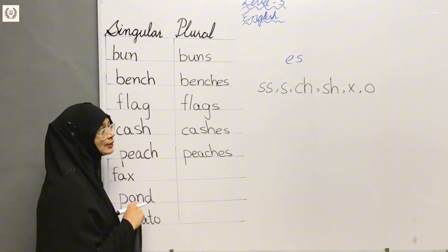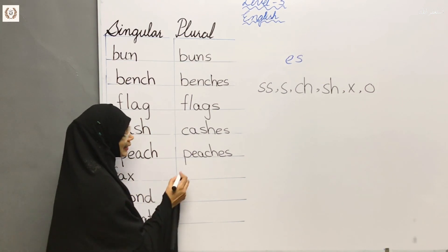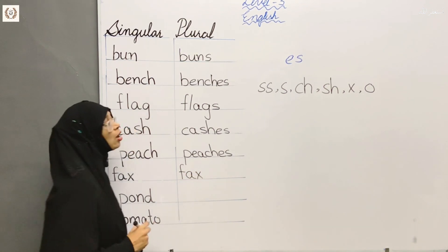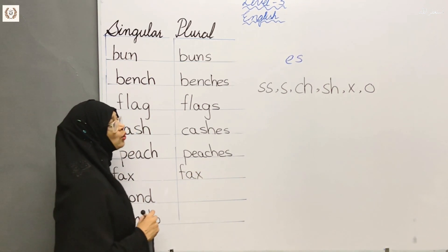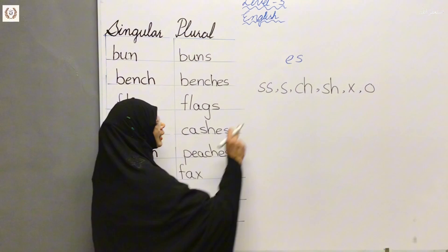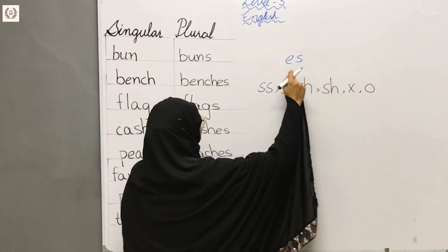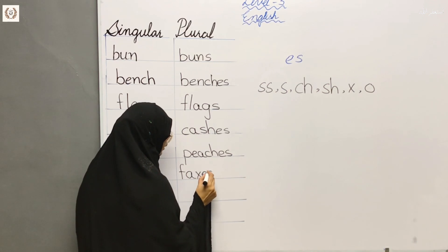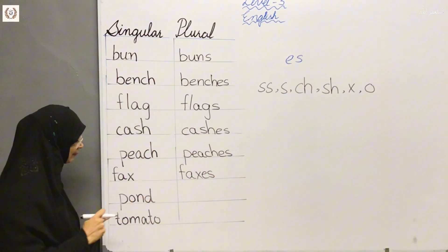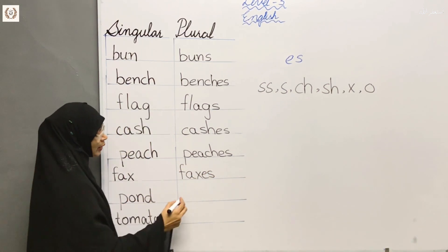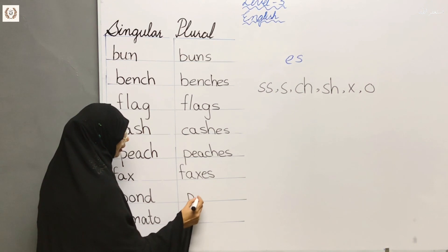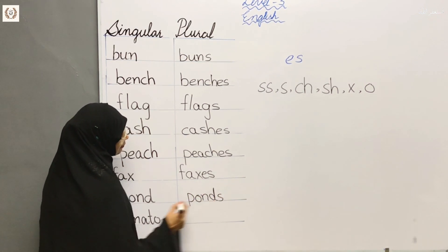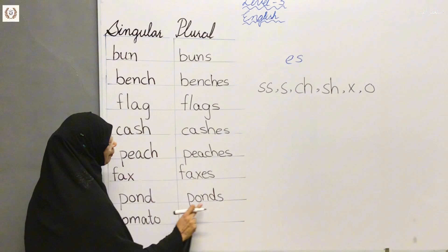F-A-X — Fax. How do we write it? F-A-X — Fax. And when we use the plural, what do we write? When we write plural, what will end? So what will we write? Faxes. The simple word is F-A-X.